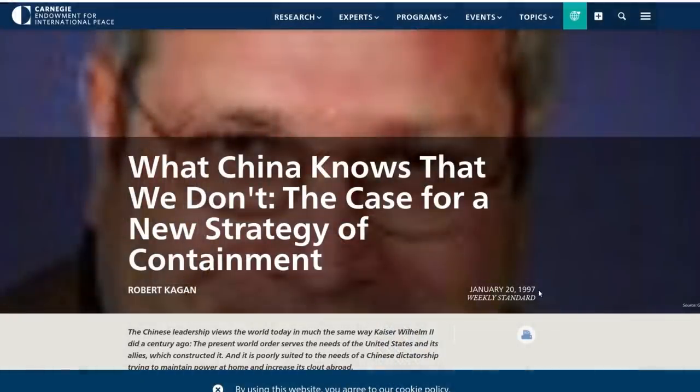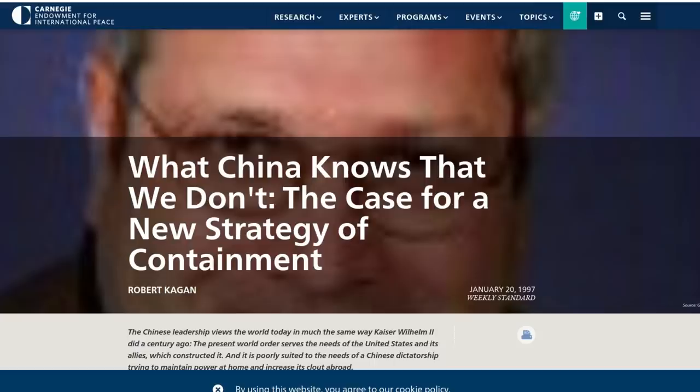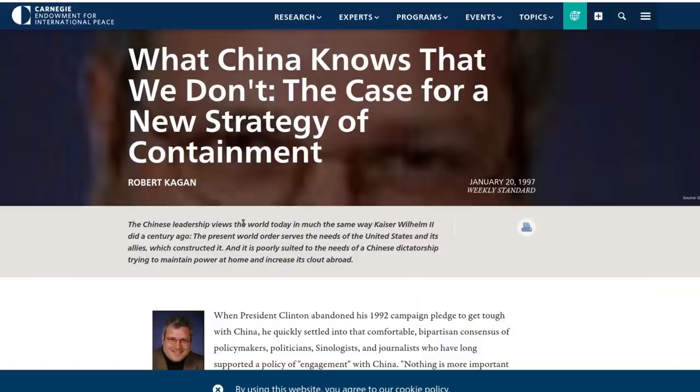What China Knows That We Don't, the case for a new strategy of containment by Robert Kagan. He's one of the architects and proponents of the illegal 2003 U.S.-led invasion of Iraq. And here he is back in 1997, talking about how the U.S. needs to encircle and contain China.